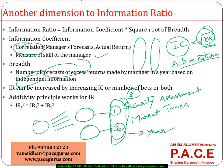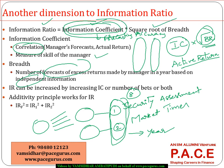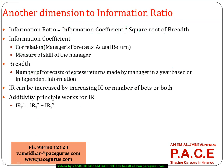From any manager's standpoint, he can increase the information ratio by either increasing the information coefficient — which means increasing forecasting accuracy — or by keeping the forecasting accuracy at the same level but increasing the number of forecasts he is making. The information ratio is also more or less additive.